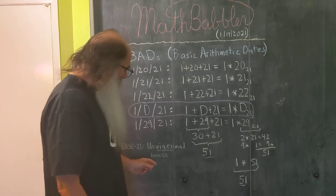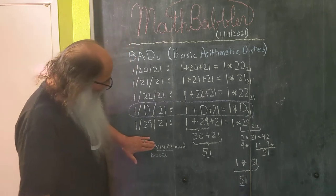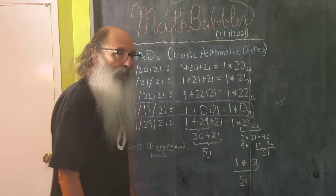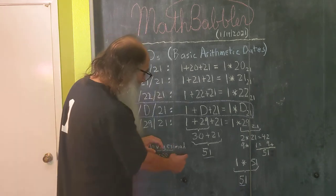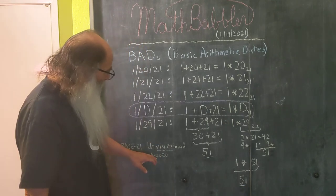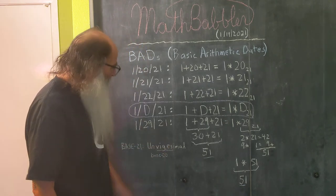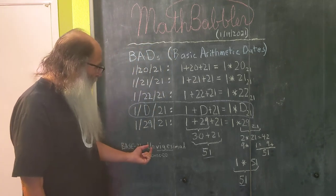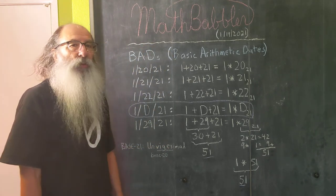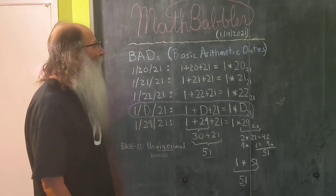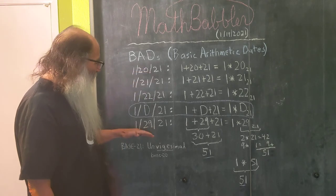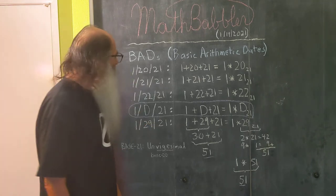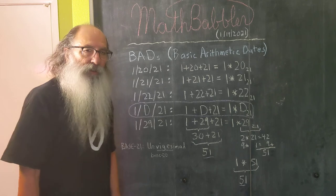Just a little bit, the base 20 number system is called the vigesimal number system. Base 10 is called the decimal. So base 20 is the vigesimal number system. And then if we stick the UN in front of this word, that's the name for the base 21 number system. So this was just a pattern that we saw coming up starting tomorrow here in January of the year 2021.